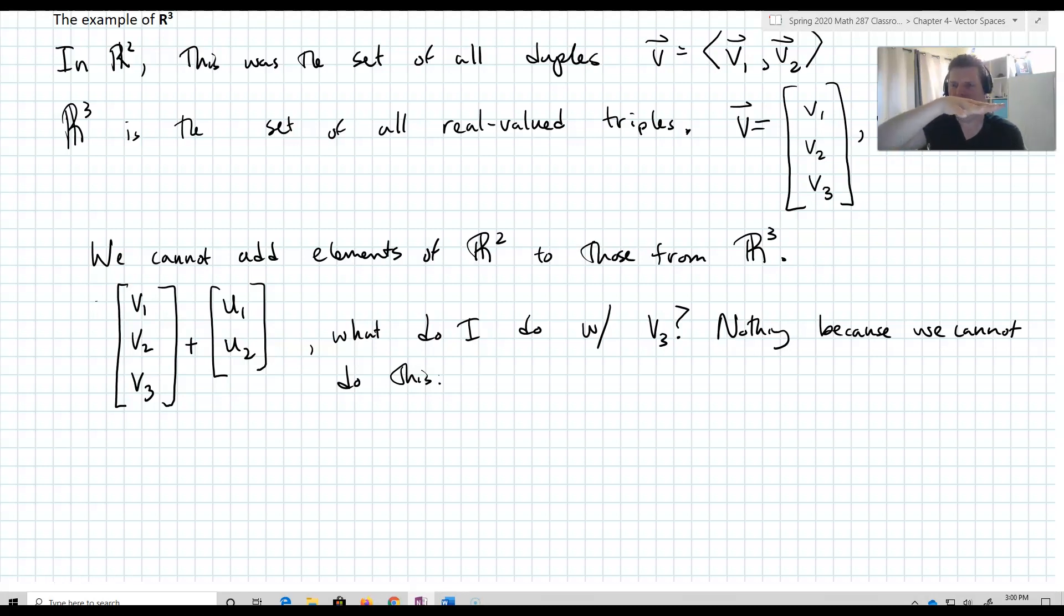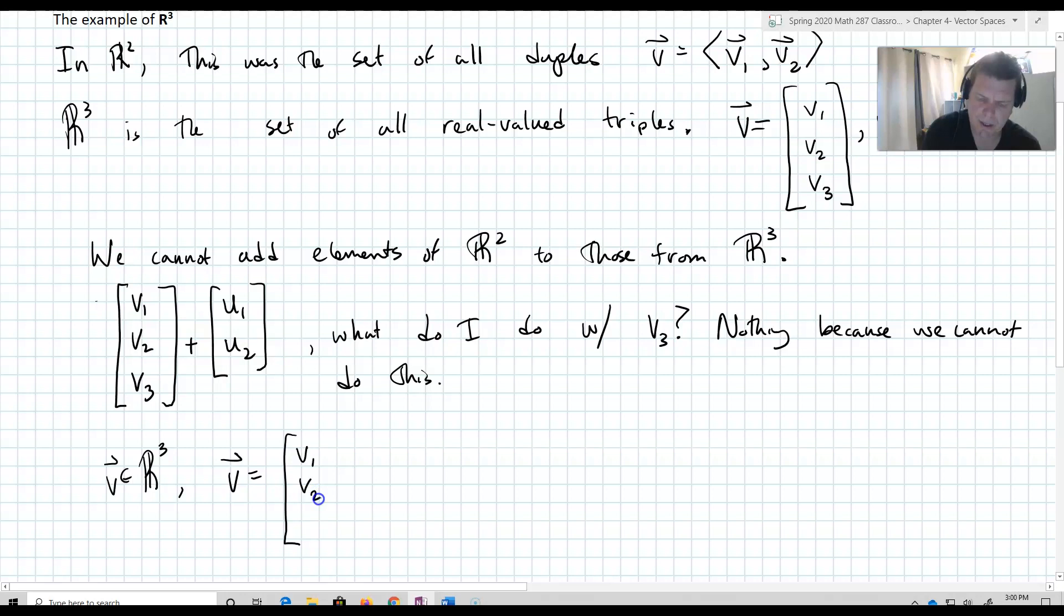In fact, what we end up having is vectors that look like this. So, elements of R³, V belonging to R³, such that V equals V1, V2, and then a zero here for the third term. Now, those, these are on the XY plane. And they're in R³, because they have three terms. This guy right here, U, not in R³.